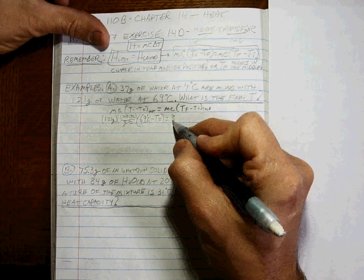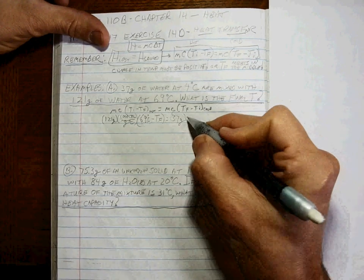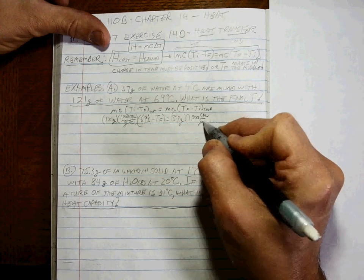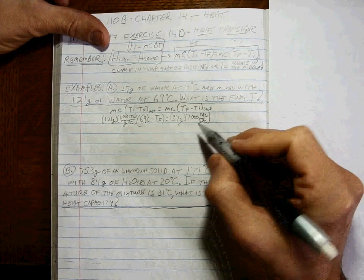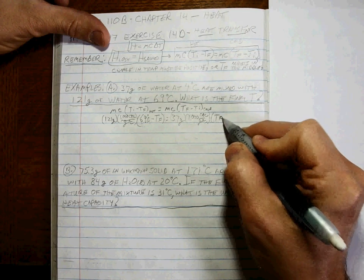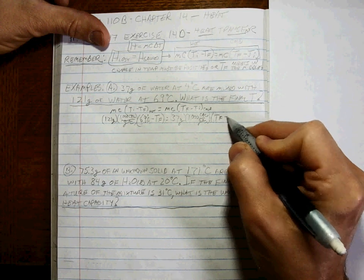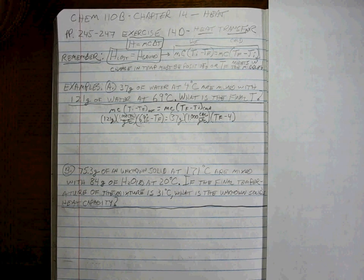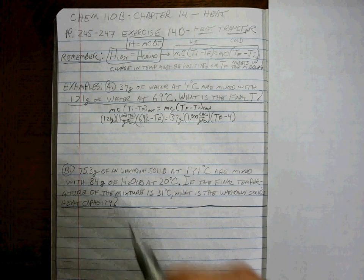The mass of the cold is 37 grams. It's water liquid again, so you use the same heat capacity for water liquid. And here T final minus 4. Alright, can you do that algebra? Sure you can. Let's do some simple calculations here.